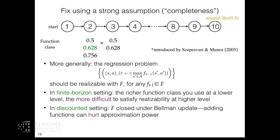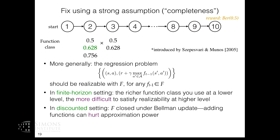You can fix this by introducing much stronger assumptions on the function class. In particular, if the function class is closed under the Bellman update, then whatever predictions you can make for one level you need to be able to make the same predictions at the previous level — this controls error propagation and prevents it from blowing up. But this closure assumption seems very strong and can be violated even more severely with richer function approximators.